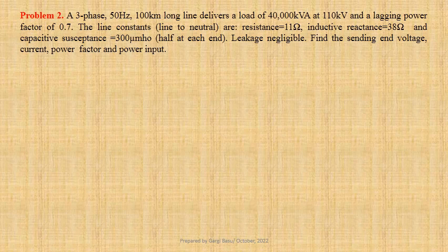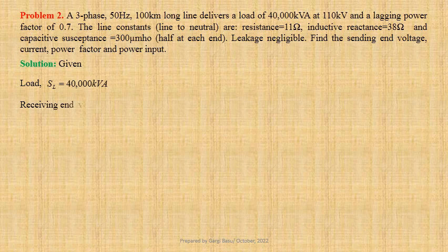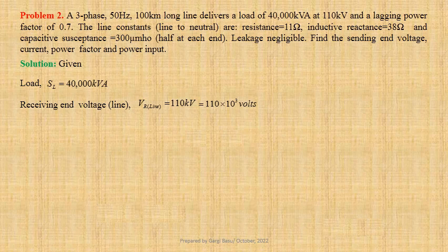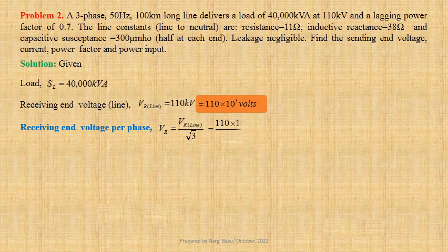Let us first write down the given data. Load SL equals 40,000 kilovolt ampere. Line to line receiving end voltage Vr_line equals 110 kilovolts, that is equal to 110 × 10³ volts. For a star connected system, receiving end voltage per phase Vr equals Vr_line divided by √3, that is 110 × 10³ divided by √3, which gives us 63,508.53 volts.